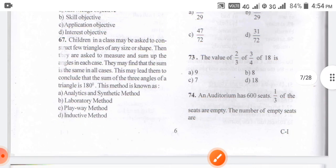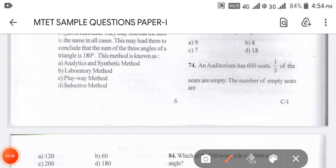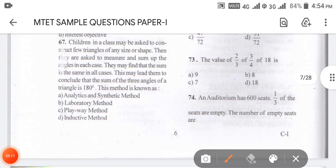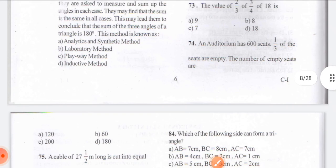The answer for 72 is 31 by 72. Coming to question number 73: the value of 2/3 of 3/4 of 18. First we take 3/4 of 18, which gives 27/2. Then 2/3 into 27/2 gives 9. So the answer for 73 is option A — 9.